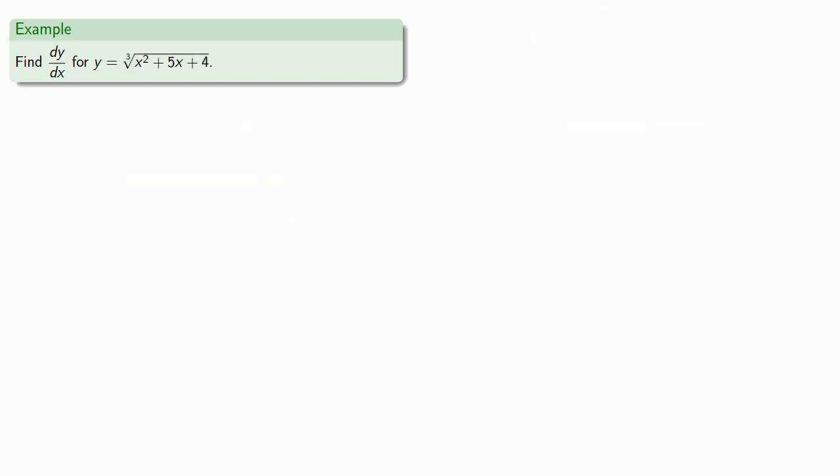We can also use implicit differentiation to simplify some ordinary differentiation problems. This is especially useful when we have a function like cube root that corresponds to a simpler inverse function. In this case, if I have y equals the cube root of something, then I can eliminate the cube root through a simple algebraic manipulation.